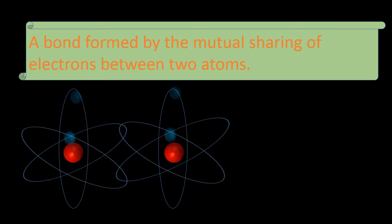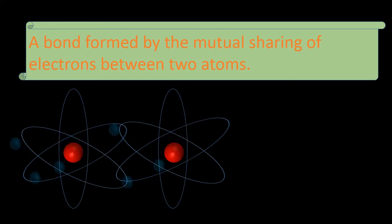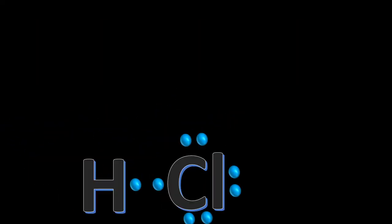Why do atoms form covalent bonds? Atoms form covalent bonds when they do not want to lose their electrons completely or they do not want to gain electrons permanently. At that time they share their electrons and form a unique bond known as a covalent bond. On the basis of polarity, covalent bonds have two types: polar covalent bonds and non-polar covalent bonds.